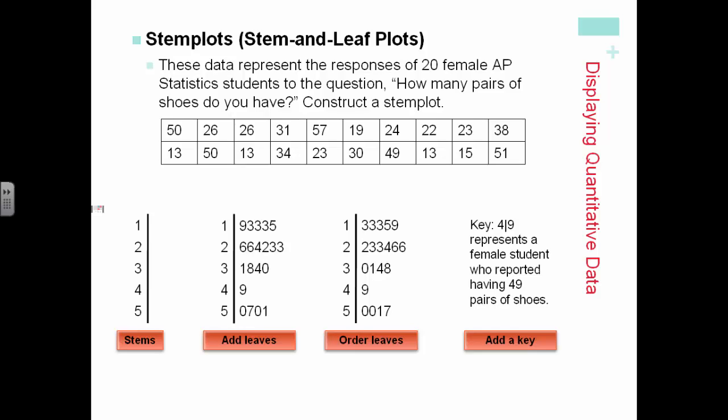You cannot just write a number or an example. You have to pick one of the stem and leaf examples, and then explain what it represents. Again, please be real specific. All you need to list is one example in the problem.